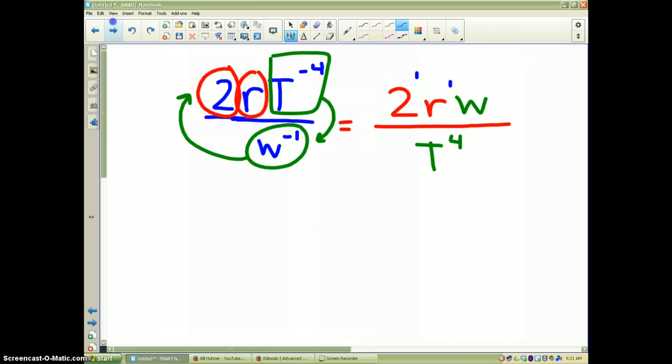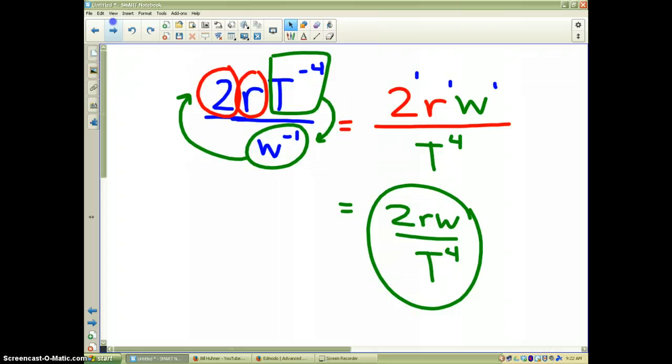Now, obviously, in the numerator, that's 2 to the first power, r to the first power, w to the first power. But, as you all know, we don't write first powers. So, the final answer that you should have written for this problem is what I have written in green. 2rw divided by t to the 4th. And, I hope that explains how to do negative powers for you.